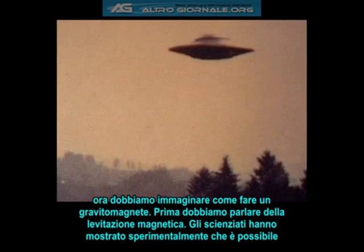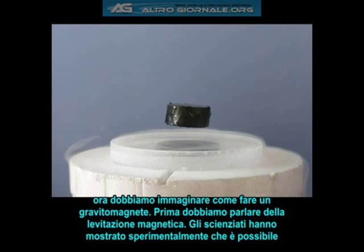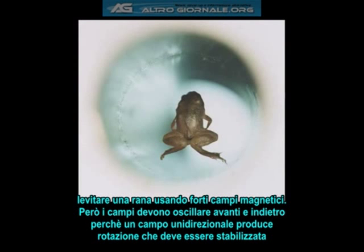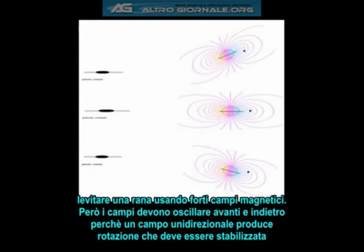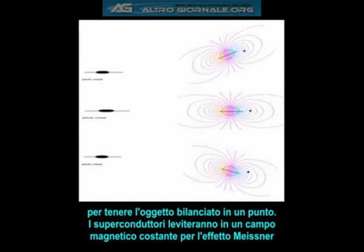First, we need to talk about magnetic levitation. Scientists have experimentally shown that it is possible to levitate a frog using strong magnetic fields, but the fields need to be oscillating back and forth, because a unidirectional field produces rotation which needs to be stabilized in order to keep the object balanced in one place.